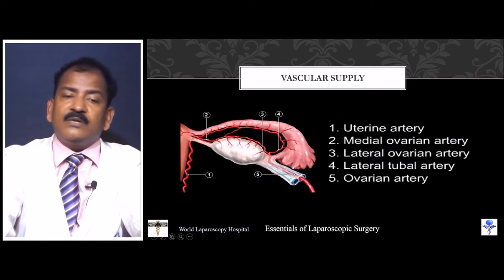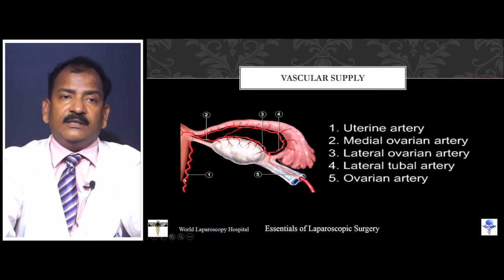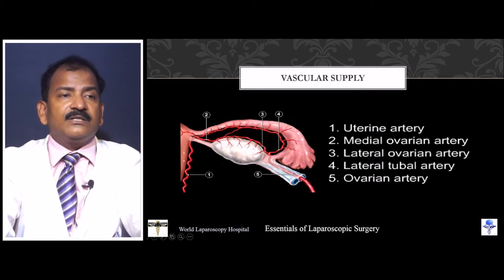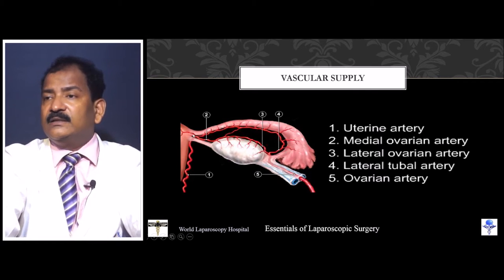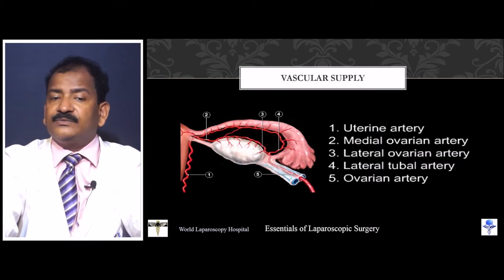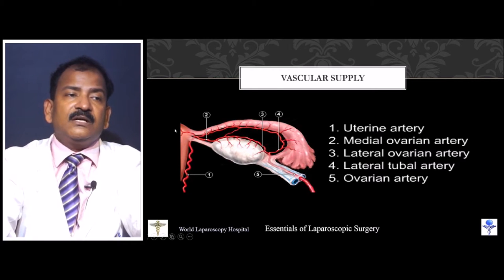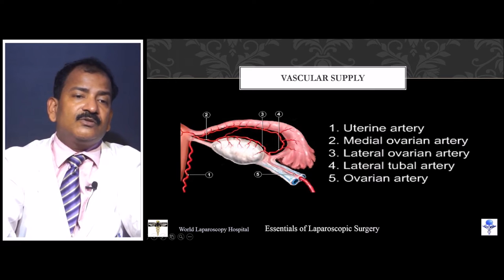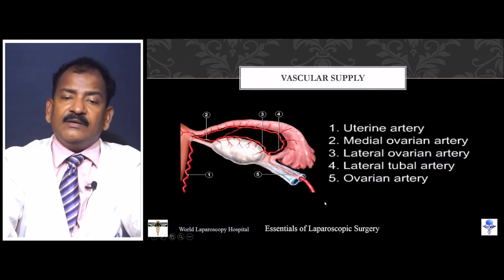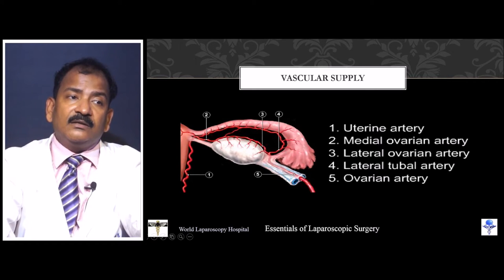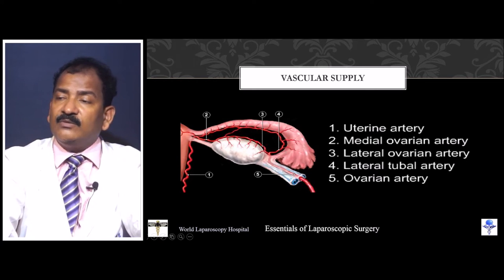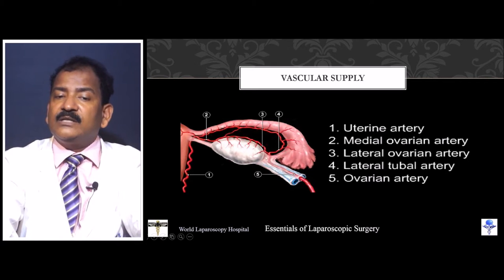There are two blood supplies to the tube. One is the ascending uterine branch, which near the proper ovarian ligament gives three branches — one to the uterus, one to the mesosalpinx, and one to the mesovarium. Similarly, the ovarian artery, a direct branch of the aorta coming through the infundibulopelvic ligament, at the level of the infundibuloovarian ligament gives two branches — one to the mesovarium and one to the mesosalpinx — and then they anastomose.